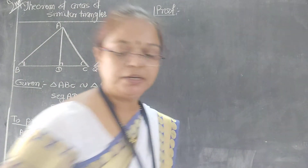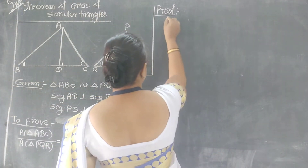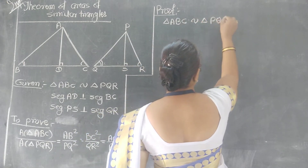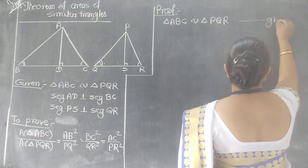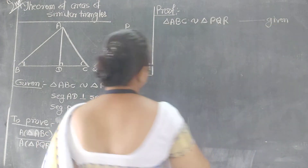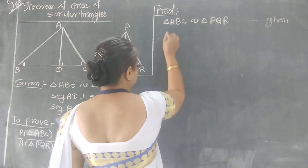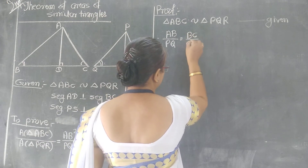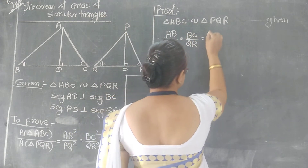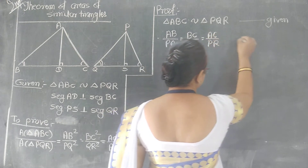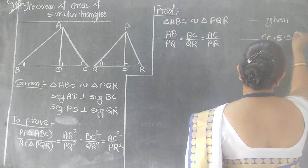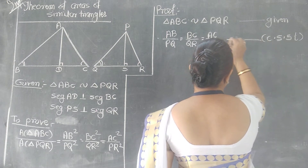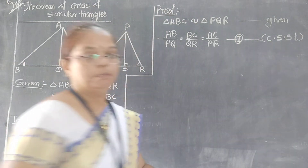First part: Triangle ABC is similar to triangle PQR because it is given. If these two triangles are similar, then their sides are proportional. Therefore AB/PQ = BC/QR = AC/PR, because corresponding sides of similar triangles are proportional. This is equation number 1.